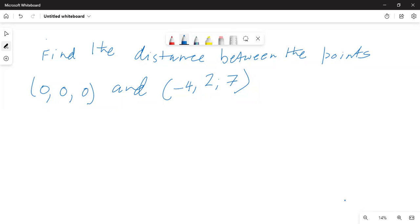This is the problem. Find the distance between the point (0, 0, 0) and (-4, 2, 7).